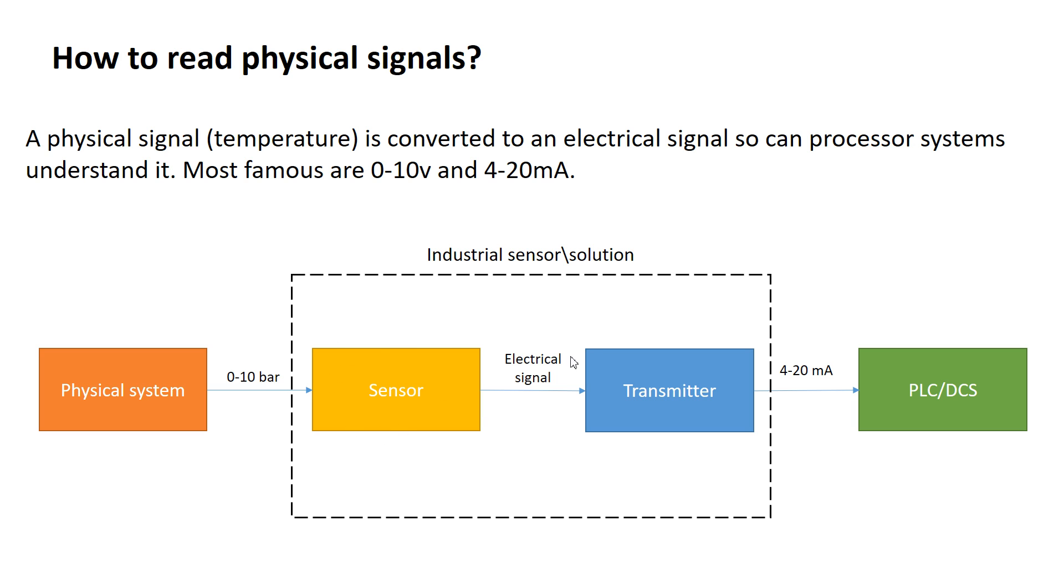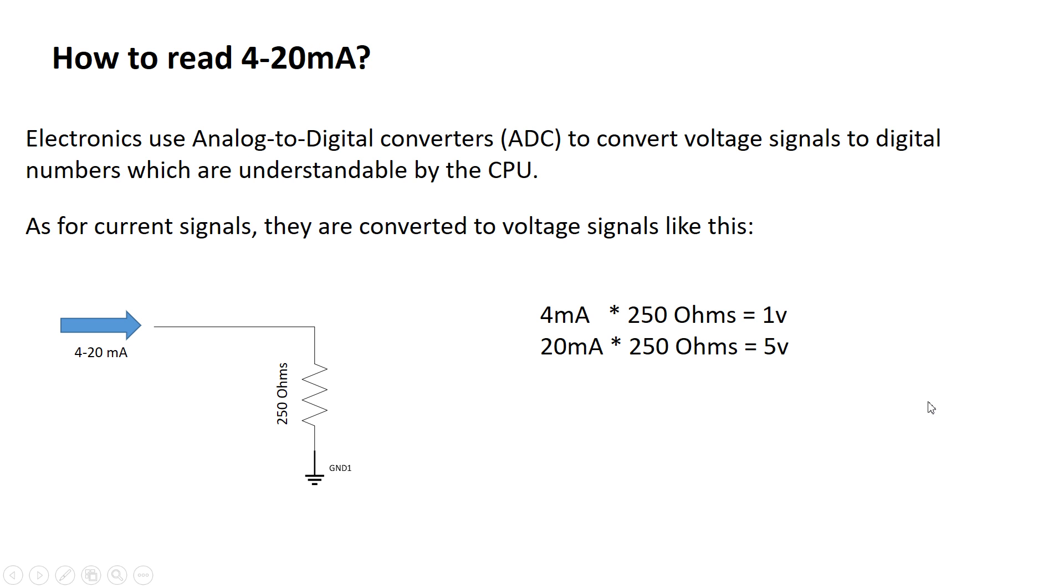It goes into a sensor, which gives an electrical signal or a resistance, and then a transmitter converts this signal to 4 to 20 milliamps or 0 to 10 volts or any other electrical signal to the PLC or DCS.